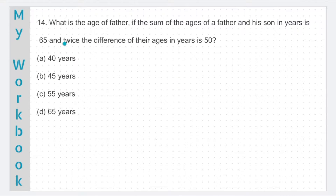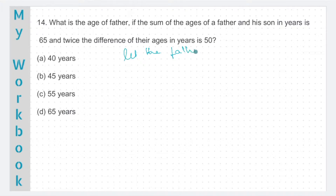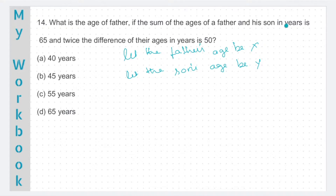Question number 14. What is the age of father if the sum of the ages of a father and his son in years is 65 and twice the difference of their ages in years is 50? Let us assume the father and the son's age to be x and y. Let the father's age be x and the son's age be y. It's given that sum of the ages of father and his son is 65. So x plus y is 65. This is our first equation.